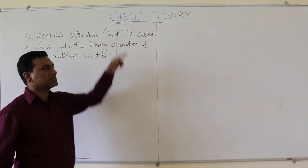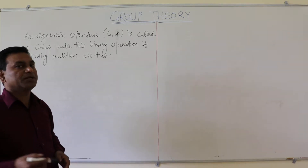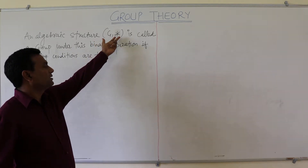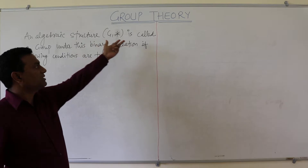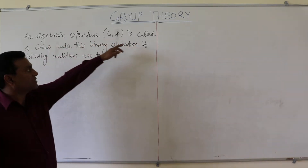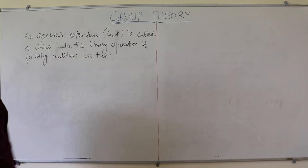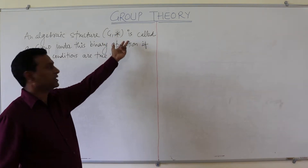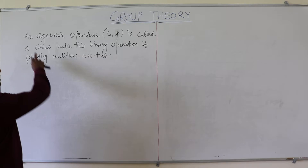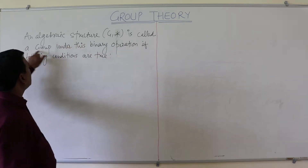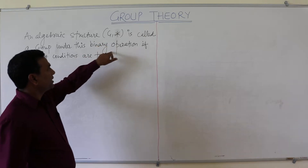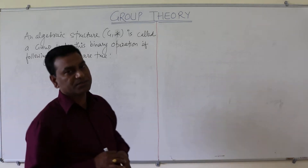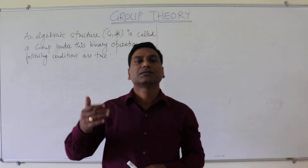Any algebraic structure — a non-empty set along with some binary operation — is known as an algebraic structure. An algebraic structure is called a group under a particular binary operation if the following conditions are satisfied. Normally in a group there are four conditions, and the fifth condition tells something additional.